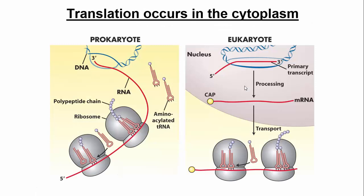Translation occurs in the cytoplasm in eukaryotes. In prokaryotes, there is no nucleus, so translation is just happening in the bacterial cell. I want to point out some players here. You're going to see a lot of pictures, and I want to point out what different structures are.